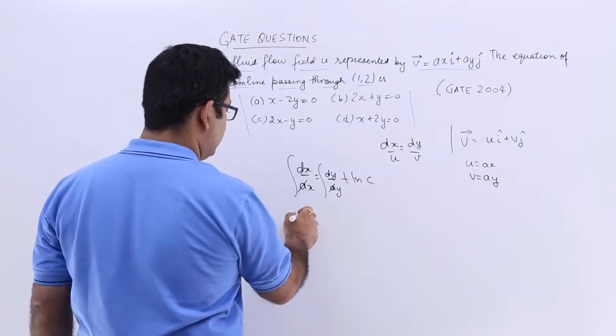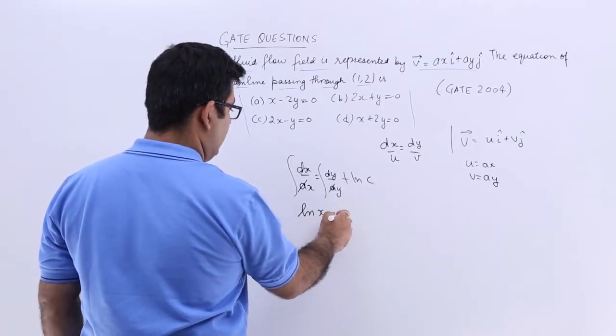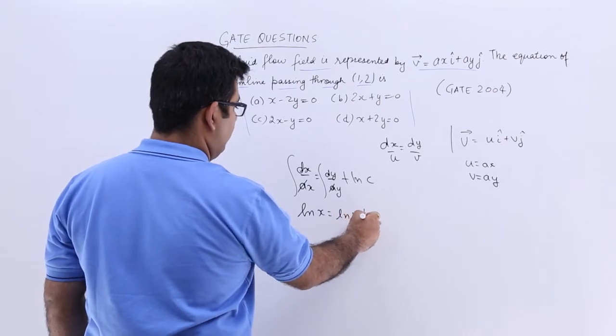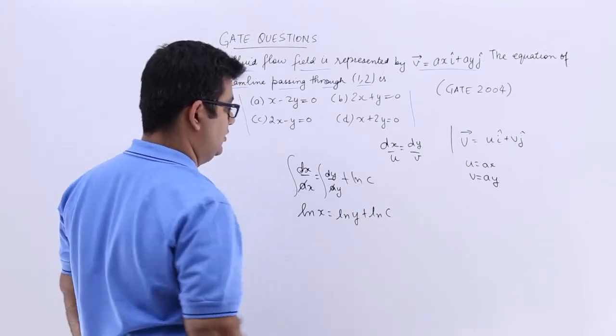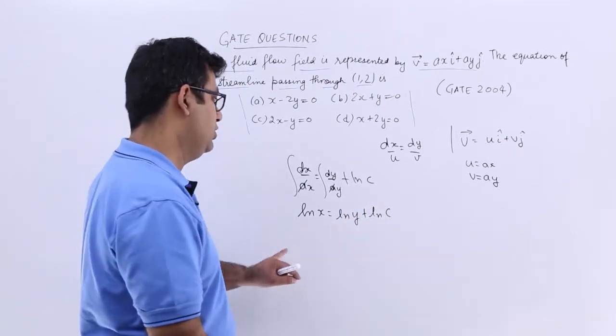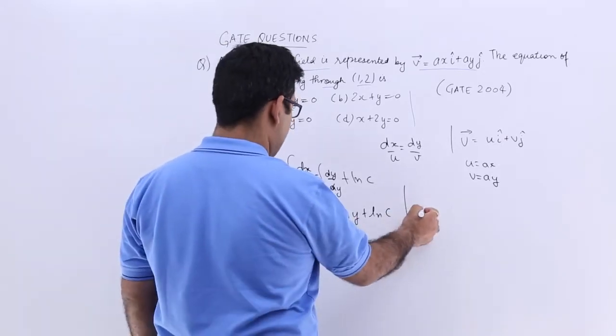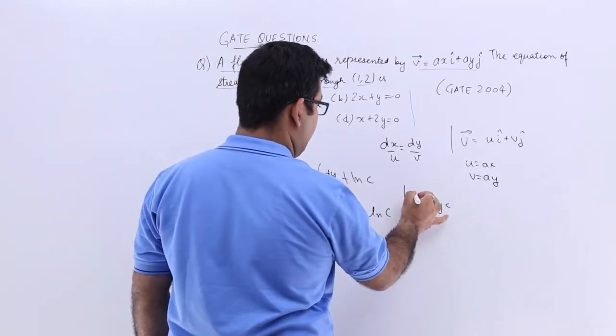So this will become log of x is equal to log of y plus log of c. So you can take off all the logs. You will get x is equal to y into c.